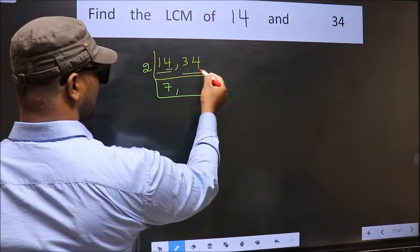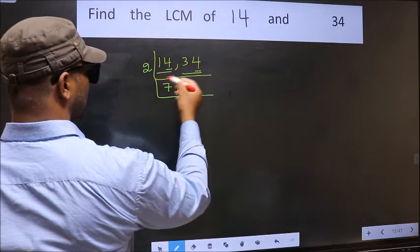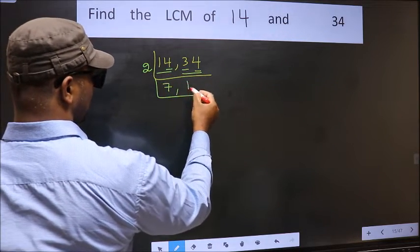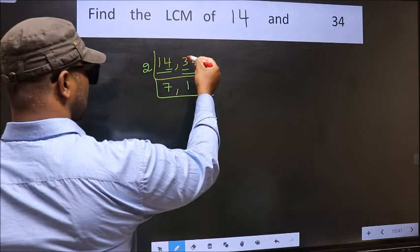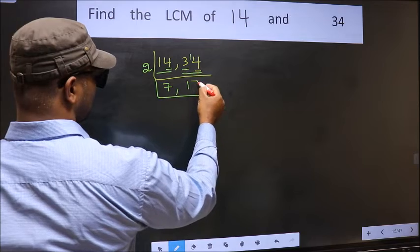Now, the other number 34, last digit 4, E1, so this is divisible by 2. First number 3, a number close to 3 in 2 table is 2 1's 2. 3 minus 2, 1, 1 carried forward 14. When do we get 14 in 2 table? 2 7's 14.